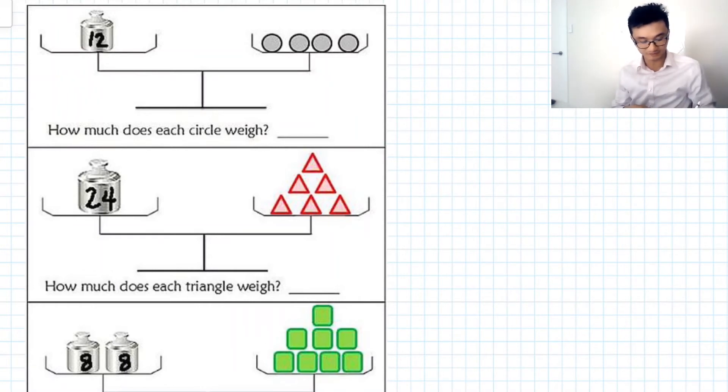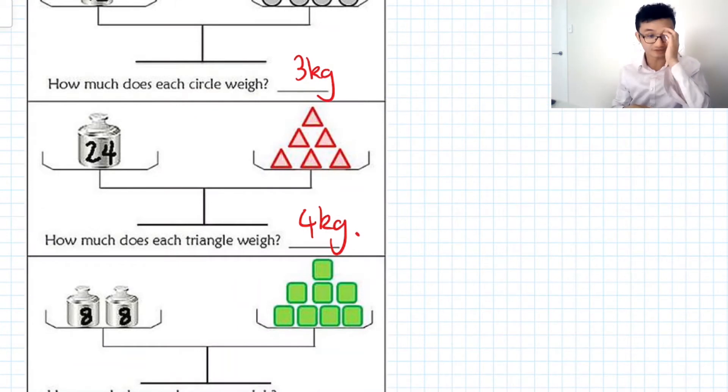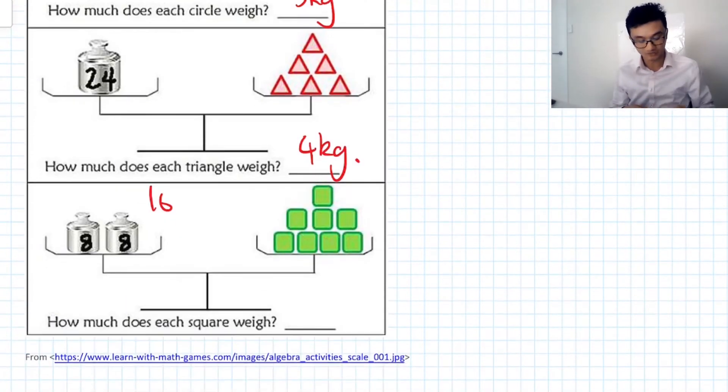This one here we can see that this weighs 12 or whatever the point is. Let's say kilos. So each of them circles would be 12 divided by 4. That's just 3 kilos. Same thing over here. We've got 24 of these total of the total weight and then we've got 6 of these triangles. So 24 divided by 6. That would be 4 kilos. And last one we've got 2 8's which give us 16. So this whole thing here is 16 and we've got 1, 2, 3, 4, 5, 6, 7, 8 of these squares. So 16 divided by 8. That's just 2 kilos.